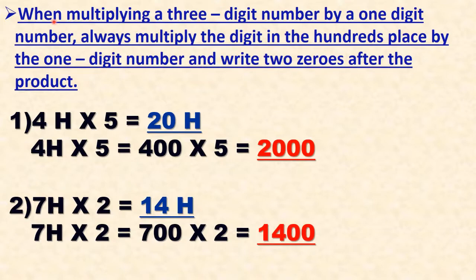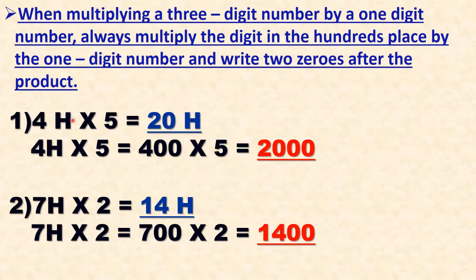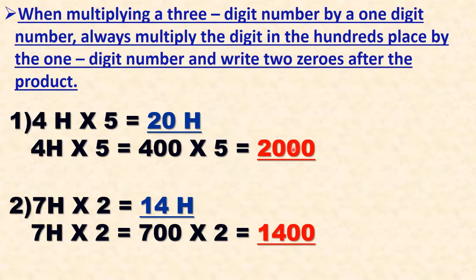Remember this point: when multiplying a three-digit number by a one-digit number, always multiply the digit in the hundreds place by the one-digit number and write two zeros after the product. First example: 4H multiplied by 5. We multiply 4 by 5 to get 20, then place the H next to 20, giving 20H. In other words, 4H means 400 multiplied by 5 — multiply 4 by 5 to get 20, then place the two zeros from 400 next to 20, so the answer is 2000.